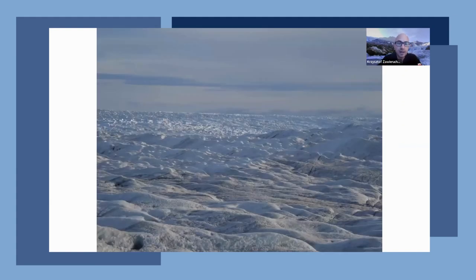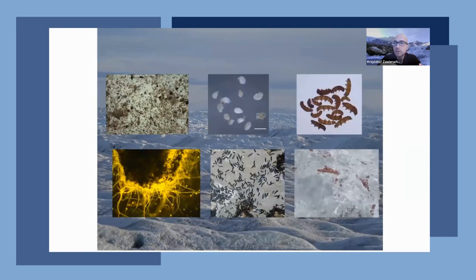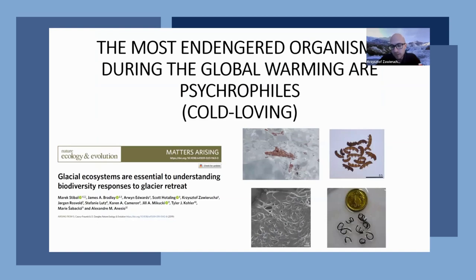What is most important for environmental biologists is that glaciers are called ecosystems. It is usually how people see the glacier — like a lifeless desert — but for glacial biologists, the surface of a glacier is full of life. Very often in literature we find information about the impact of melting glaciers on biodiversity in fjords and streams, but we should keep in mind that the most endangered organisms during global warming are psychrophiles.